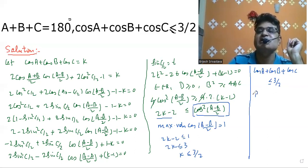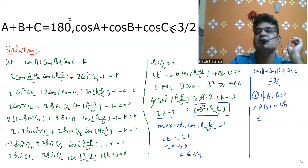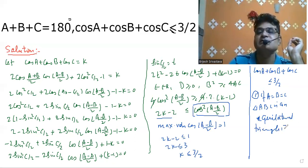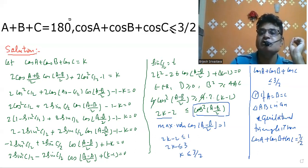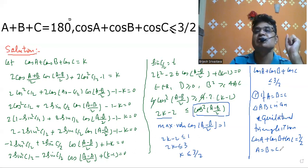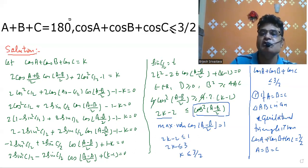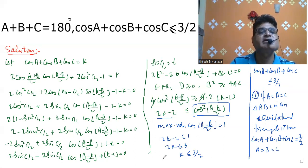Equality holds when A equals B equals C, meaning cos A plus cos B plus cos C equals 3 by 2. This is the condition for an equilateral triangle. So the maximum value of 3 by 2 is achieved if and only if the triangle is equilateral.